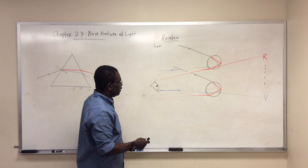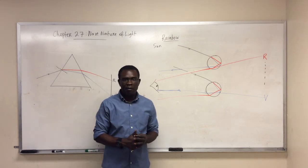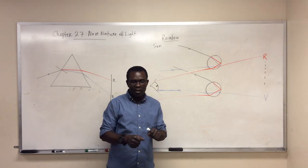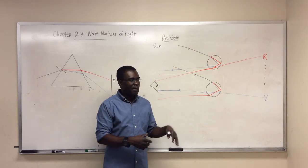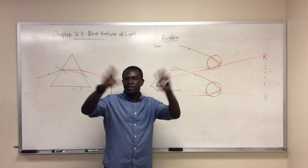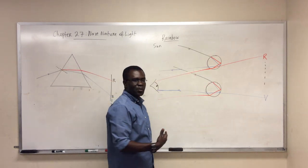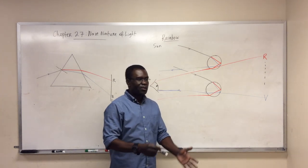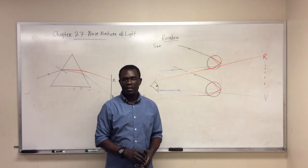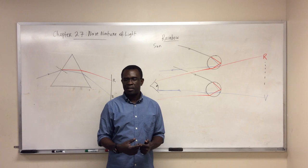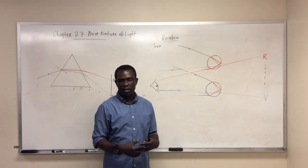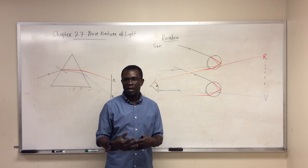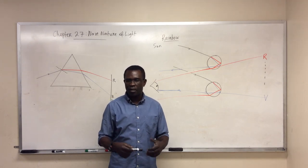You can do this simple experiment yourself: go into your yard, get a hose connected to your tap, spray a fine mist of water droplets in the air, stand so that the sun is behind you, and you can make your own rainbow. With this, we end today's lecture. The next lecture will discuss Young's single slit experiment, and after that we should be able to discuss Einstein's special theory of relativity.